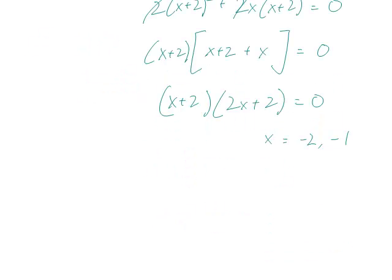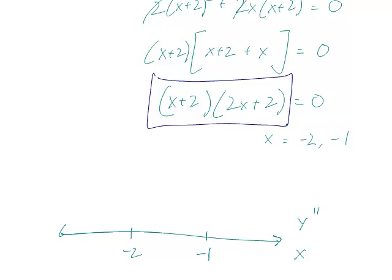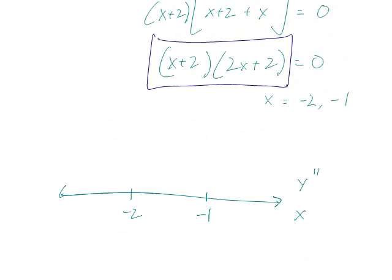All right, so let's take a look at this and draw the sign chart, x, y double prime, minus 2, minus 1. Once again, we can just plug numbers back and do this factor form of y double prime. It's not exactly y double prime. It's off by essentially 6, but 6 is a positive number, so it won't affect our results.